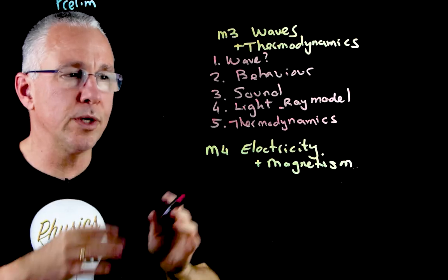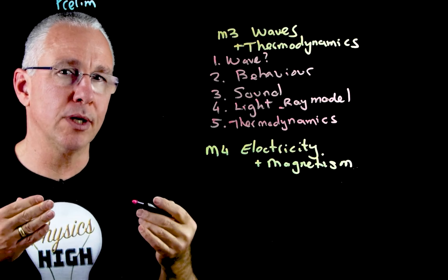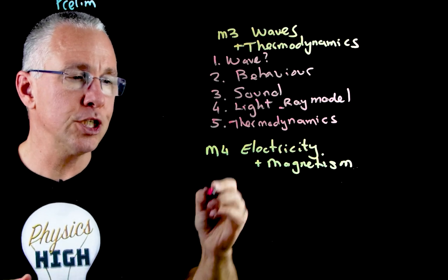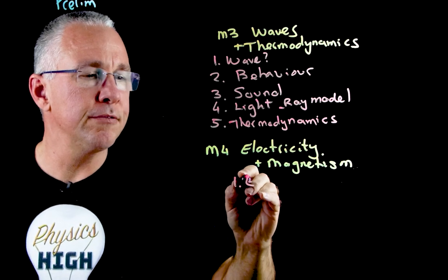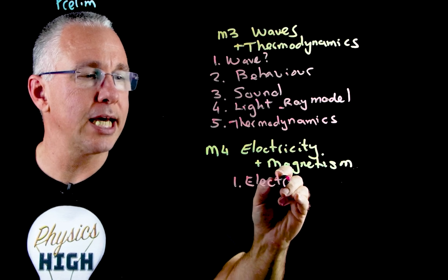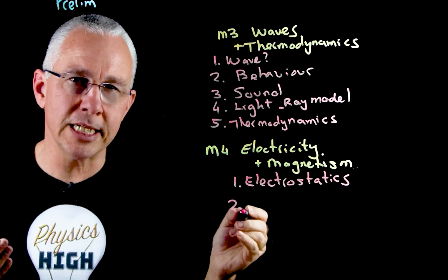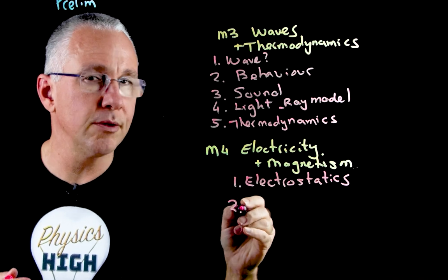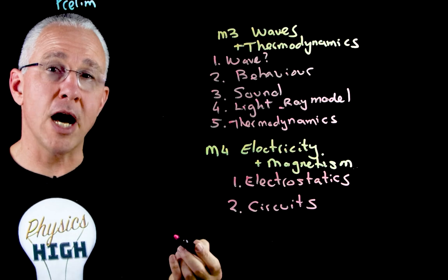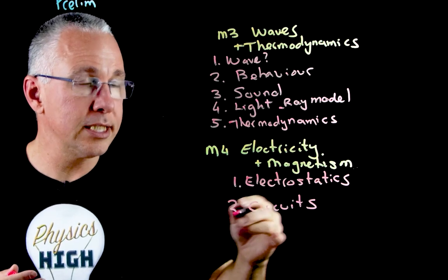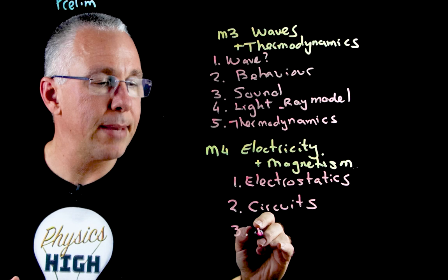Module four is broken down into a number of inquiry questions. The first looks at charges, often referred to as electrostatics. We then ask: what if those charges move? That leads into what we call circuit analysis, or circuits. And finally, we look at a separate topic — magnetism.